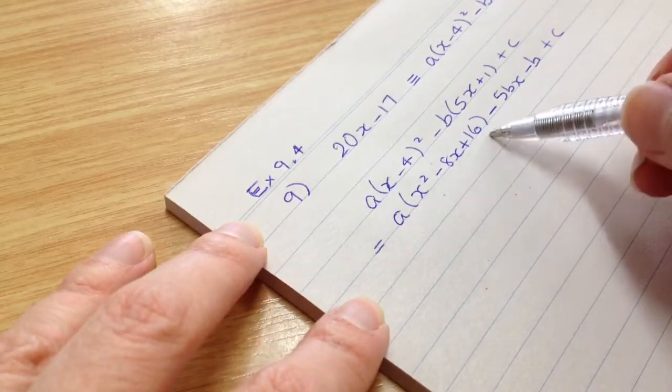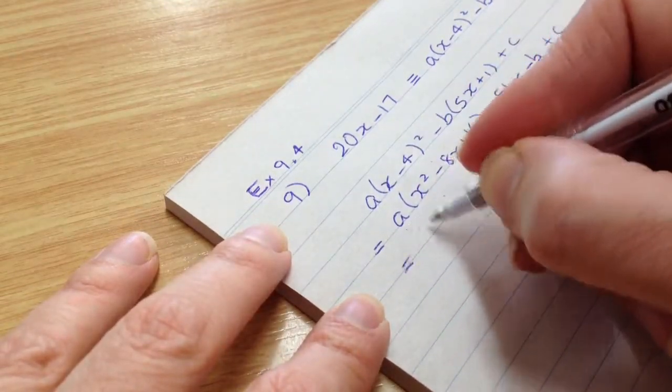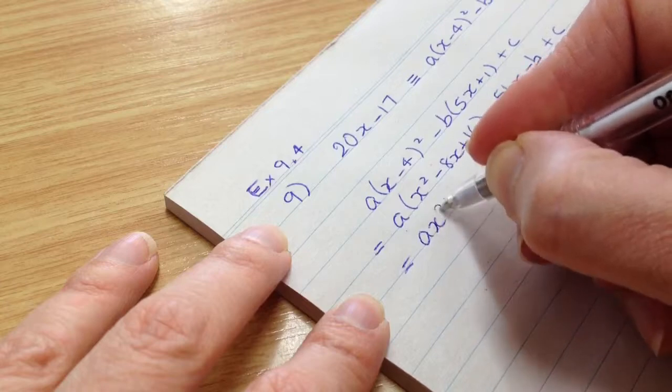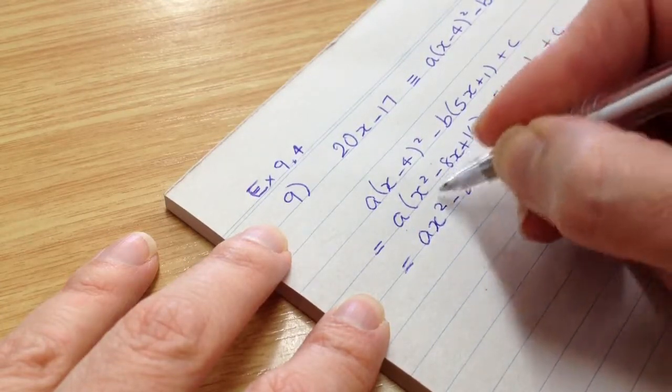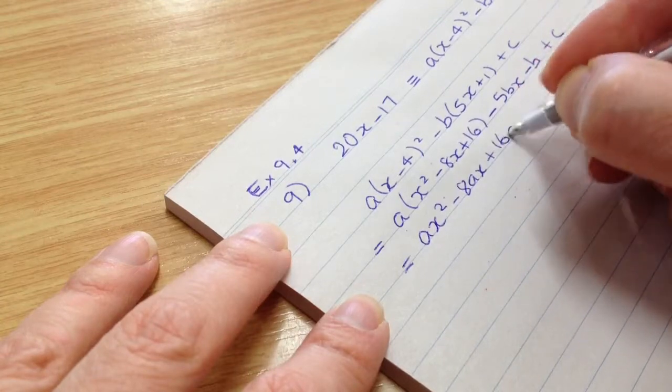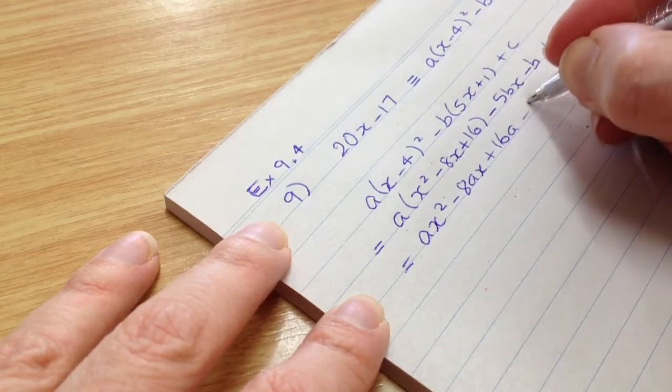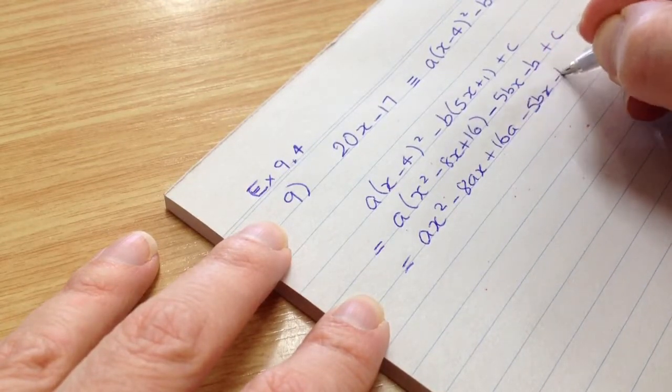Let's now expand this with the a. Okay, so a times x squared is ax squared minus 8ax plus 16a and finish writing the rest of the expression.